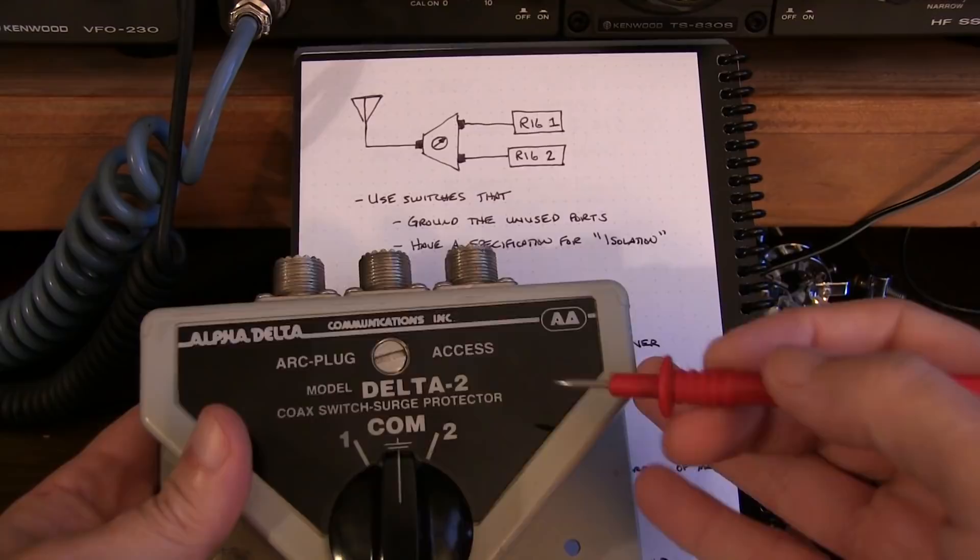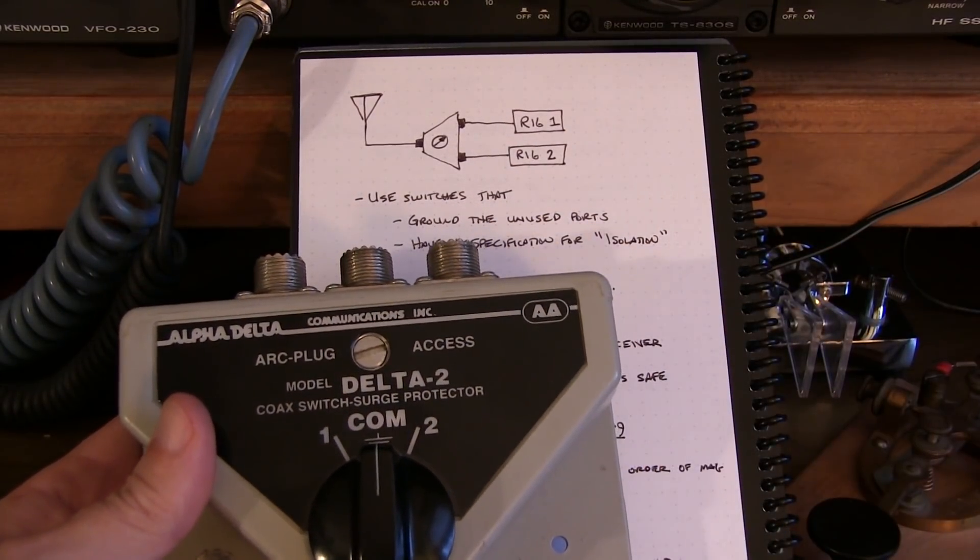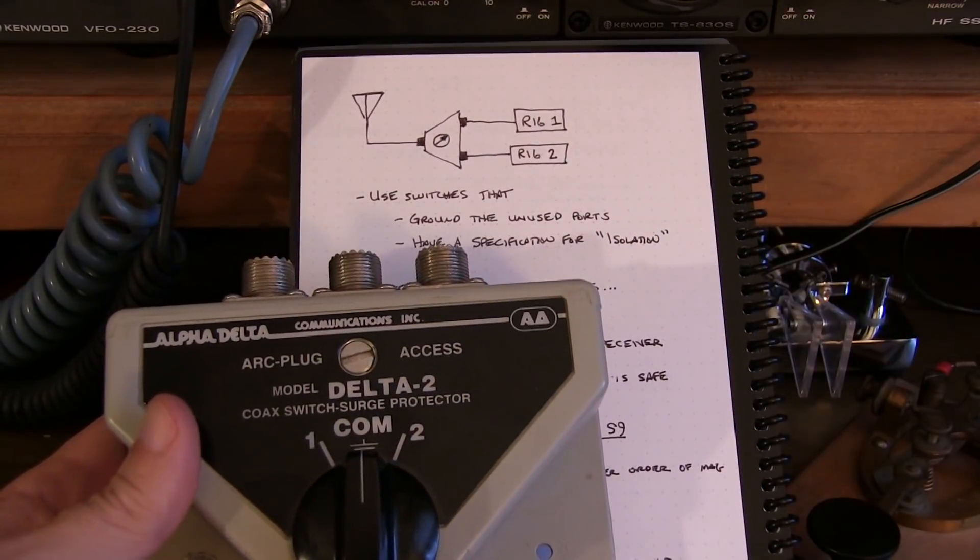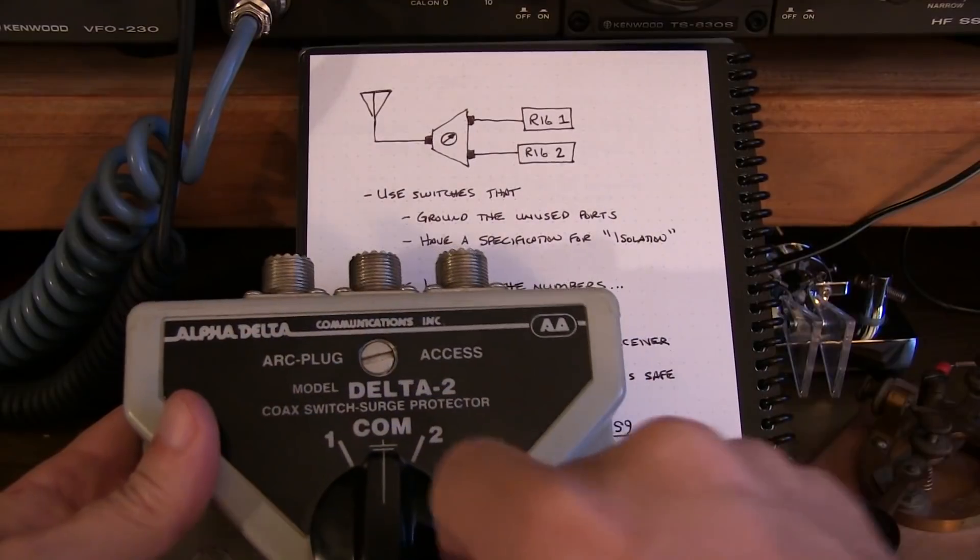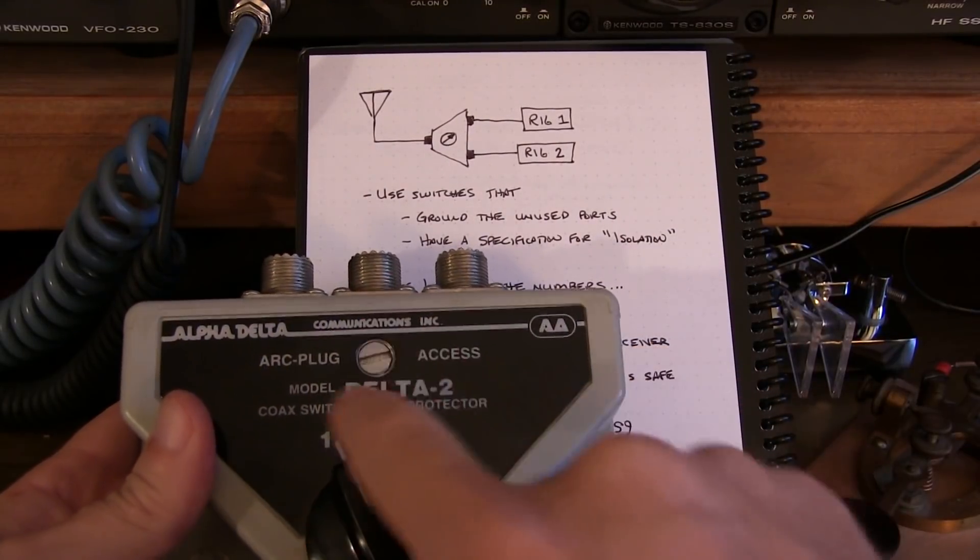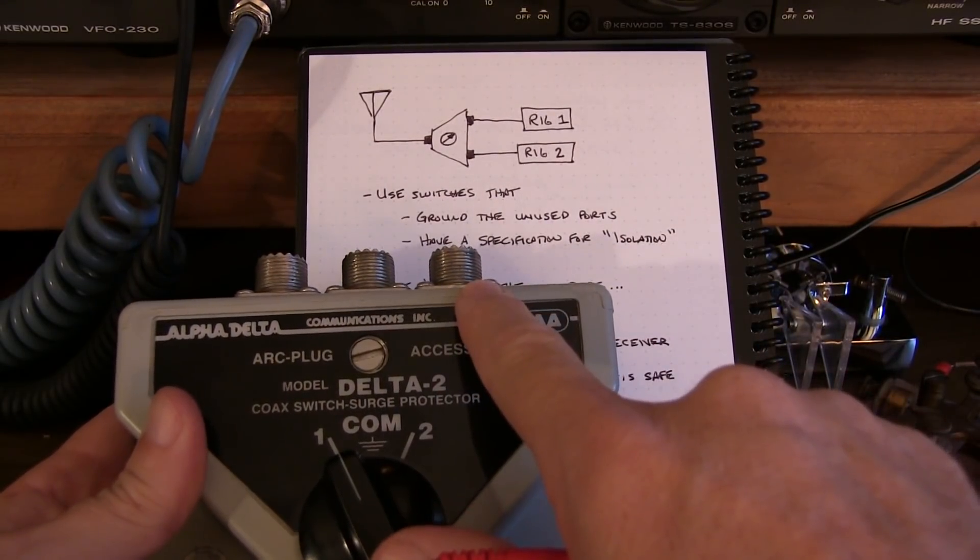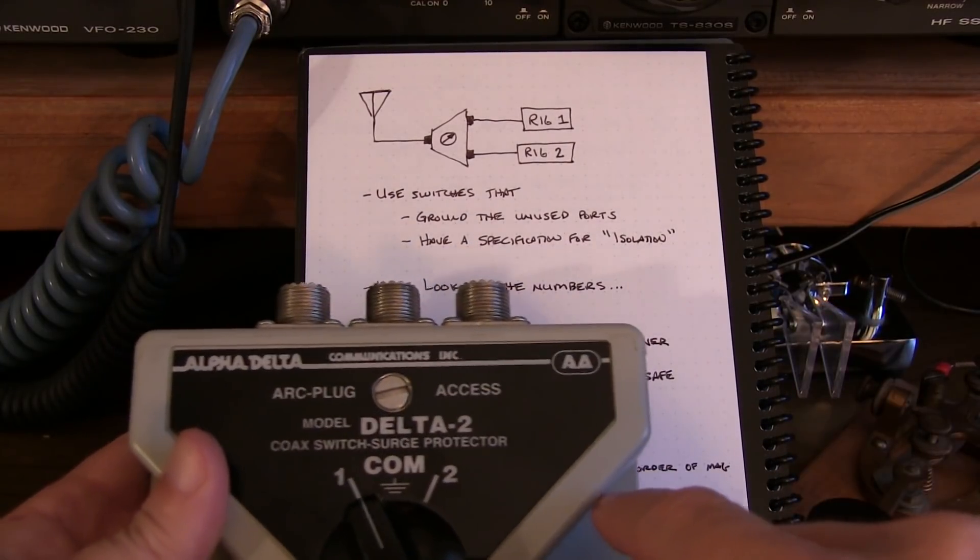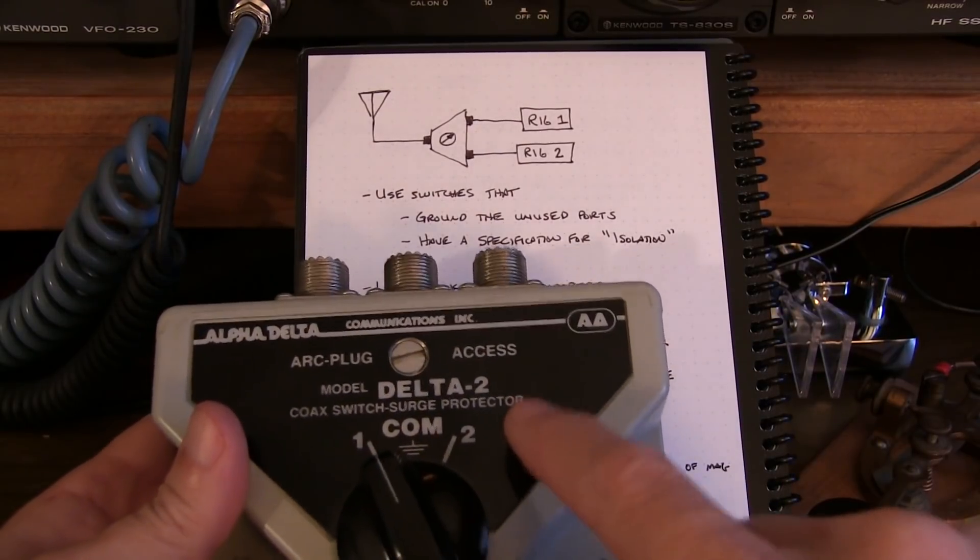So that's going to give you some measure of isolation. And most switches, especially quality switches like this Alpha Delta and even this MFJ that I held up here earlier, they'll generally have a specification for the amount of isolation that they'll provide when you're switched in one path. The isolation spec is how much of that signal will leak into the third path. So take a look for that specification. But in the meantime, let's just take a look at the numbers and see how much isolation we really need.